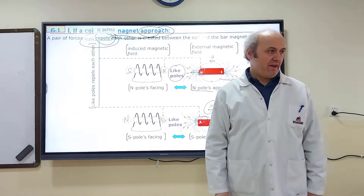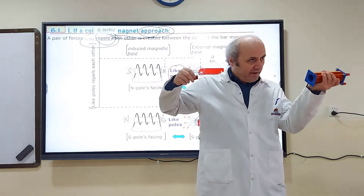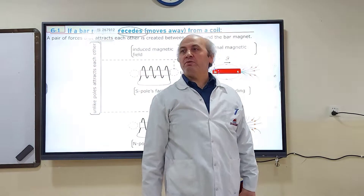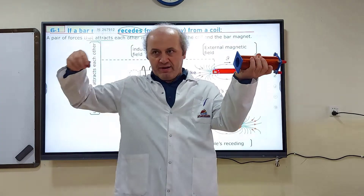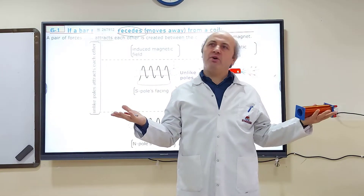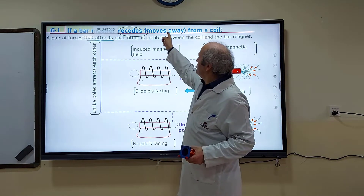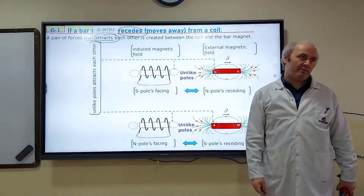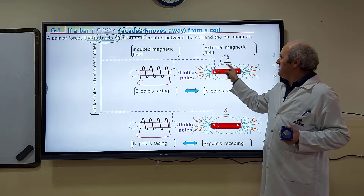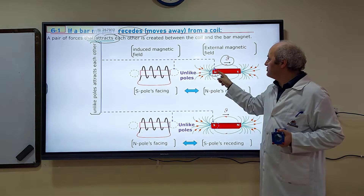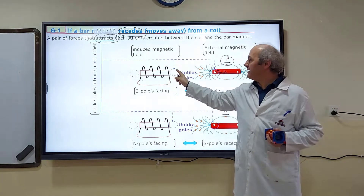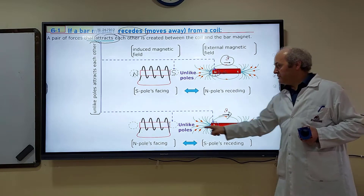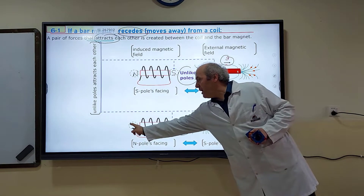What if we make them move away — receding? If we make them move away, this time it is going to be opposite. If a bar magnet recedes and moves away from the coil, a pair of attractive forces is created between the coil and the bar magnet. If N is receding, this side is going to be S, and that other side is going to be N. If S is receding, this side is going to be N, and the other side is going to be S.